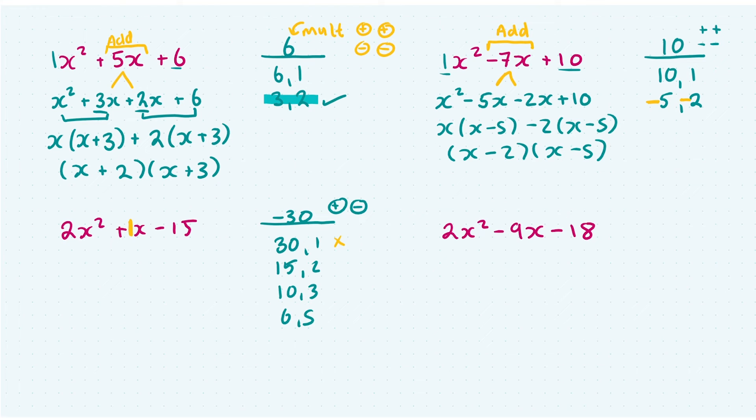30 and 1 won't. 15 and 2 won't. 10 and 3 won't. But 6 and 5 will, if I have a positive 6 and a negative 5, as positive 6 minus 5 gives us 1.